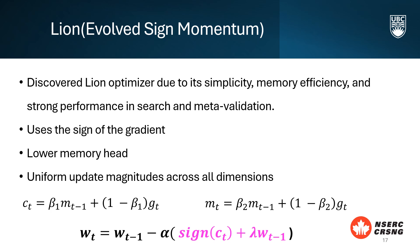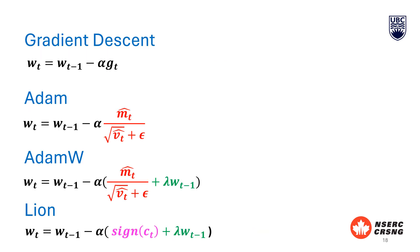Additionally, the regularization term lambda times wt-1 helps prevent overfitting by penalizing large weight values, ensuring the model remains generalizable and robust. Note the key difference between these algorithms. LION uses the sign of ct for updates and combines both the current and past gradients to determine ct, whereas AdamW uses both first and second moments of the gradients directly in the weight update.